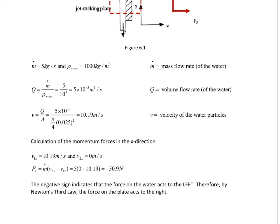If you look at the equations that we have, first of all, we have to consider the mass flow rate. We are given 5 kilograms per second and the density of water is 1000 kilograms per cubic meter.